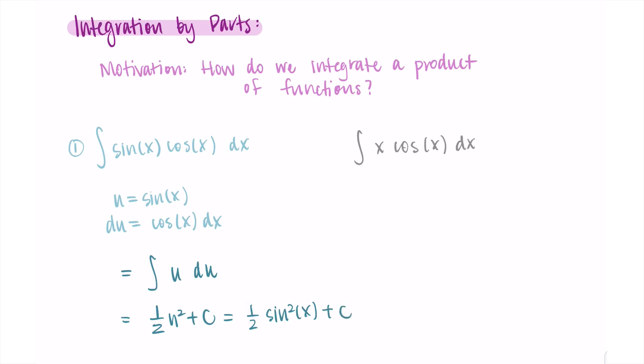So in this case, we actually know how to integrate this particular product of functions because one of the terms is the derivative of the other. So we could probably even do this the other way by using u as cosine and du as negative sine and going from there. But because sine and cosine are related with derivatives, we can use u substitution here.